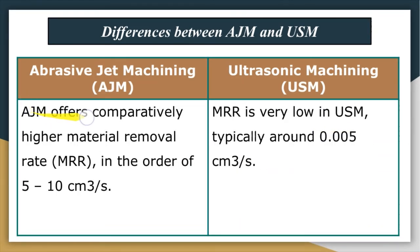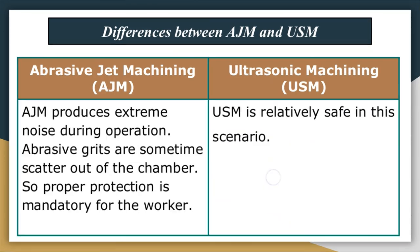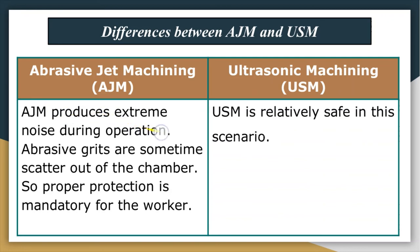Abrasive jet machining offers comparatively higher material removal rate (MRR) in the order of 5 to 10 cm³/s. In ultrasonic machining, the MRR is very low, typically around 0.005 cm³/s. Abrasive jet machining can be used for both ductile and brittle metals; however, it is preferred for hard brittle metals due to the risk of abrasive embedment in softer metals. Ultrasonic machining is commonly used for machining brittle materials, especially electrically non-conductive materials like glass, ceramics, and carbides.